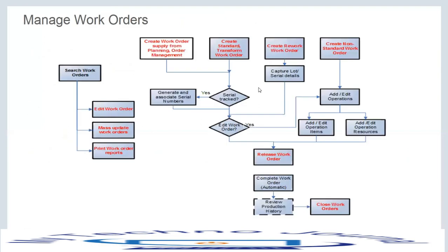This is the flow of the work order. From the work order screen, you can search work orders, edit them, mass update them, and print work order reports. Work orders can be created from different means: automatically from planning, order management, or min-max, or you can manually create a standard, transfer, or other work order type.